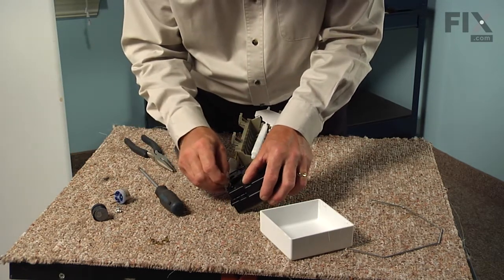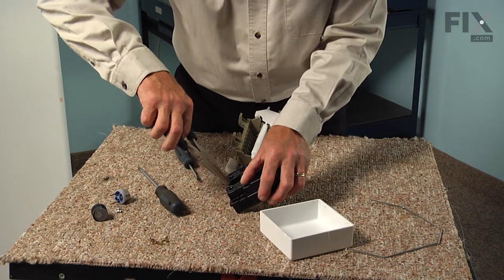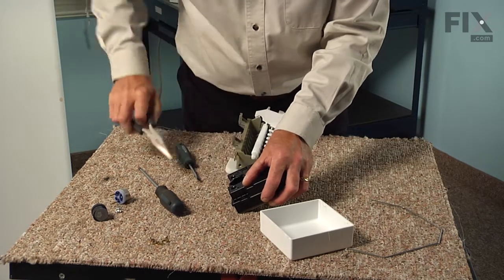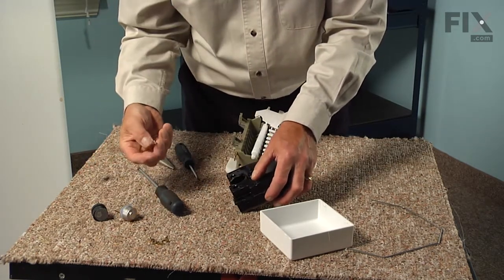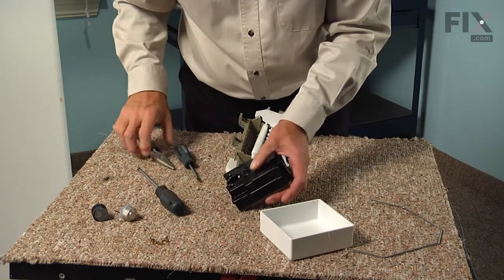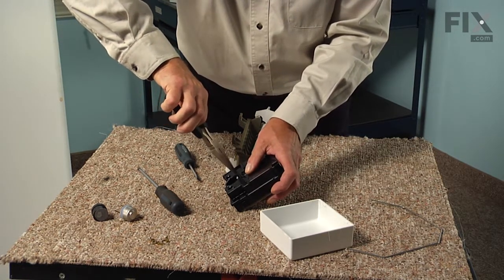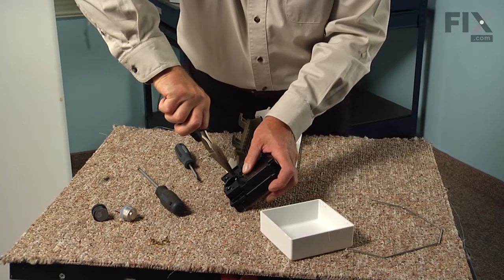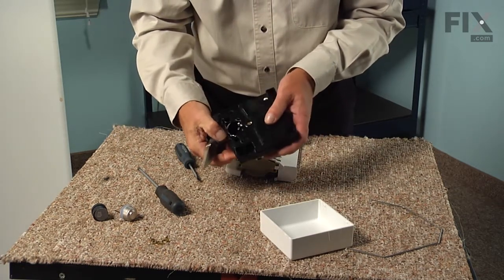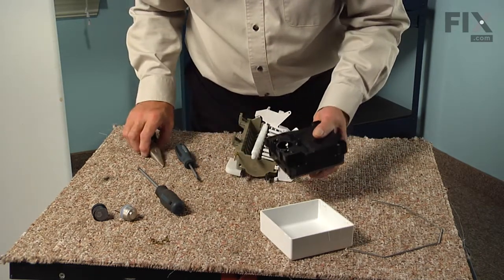We'll take the new ones, line those up and push them firmly into the ice maker head with your pliers. The outer edge should be flush with the body of that ice maker head if they're properly inserted.